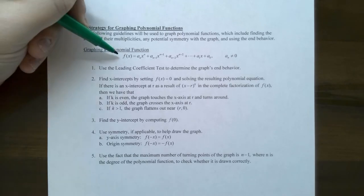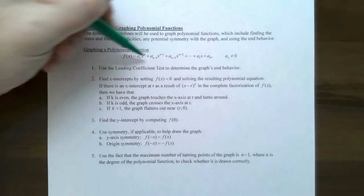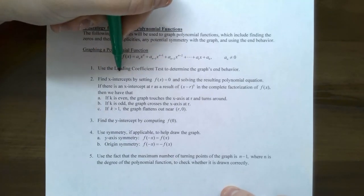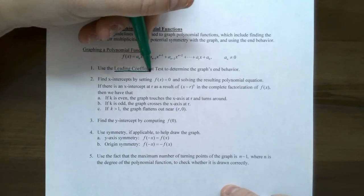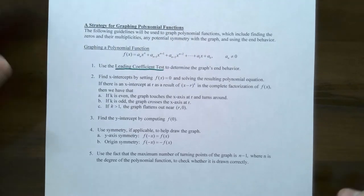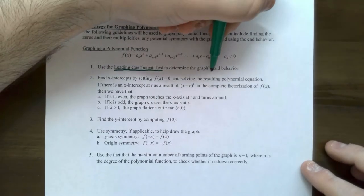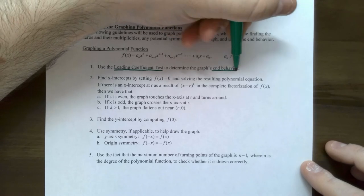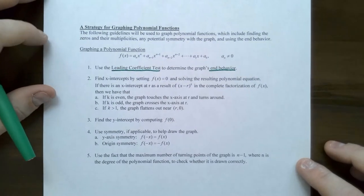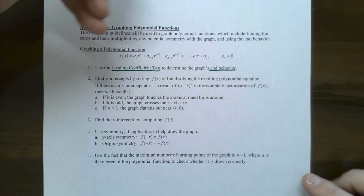If we want to graph a polynomial function, we start by determining the shape of the polynomial function on the ends of the graph. We use the leading coefficient test to determine the end behavior — whether the graph will rise or fall to the left or to the right. We'll determine that first.